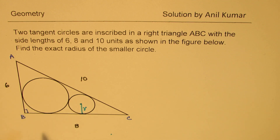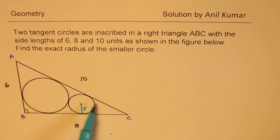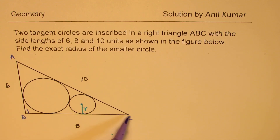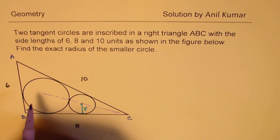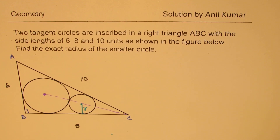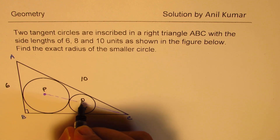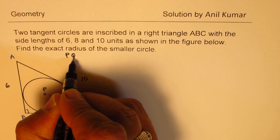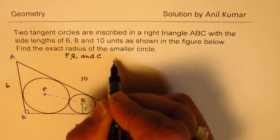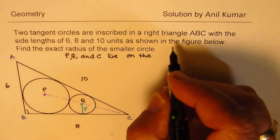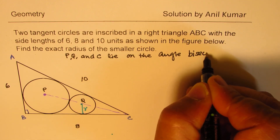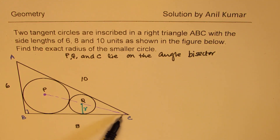As far as the bigger circle is concerned, it is inscribed within the triangle. Both circles sit on angle ACB. Their centers can be connected directly with vertex C in a straight line. We call these centers P and Q. So P, Q, and C lie on the angle bisector of angle C — they are collinear.